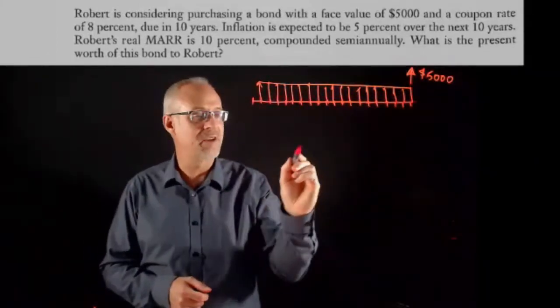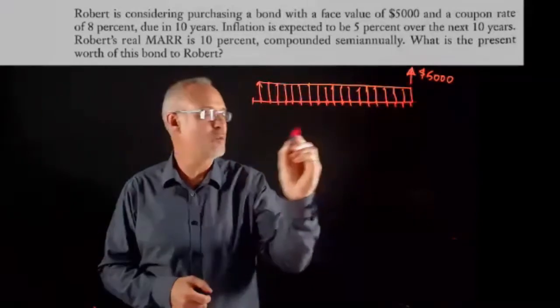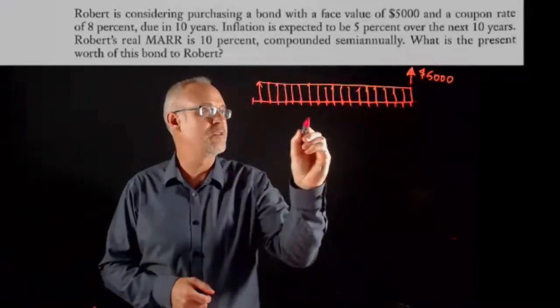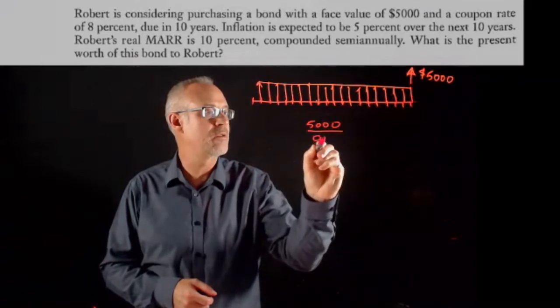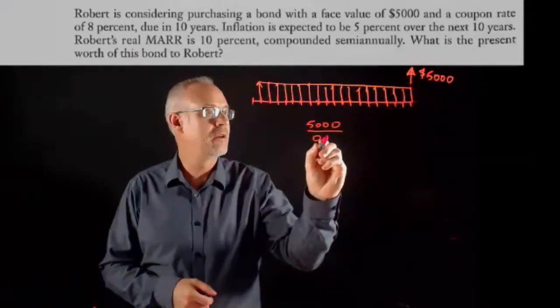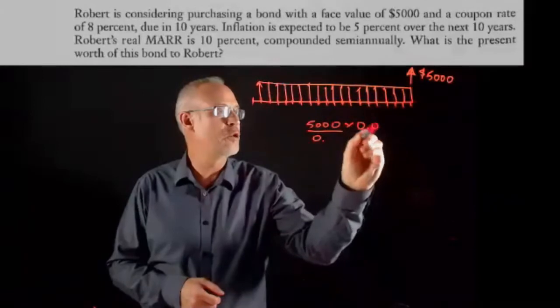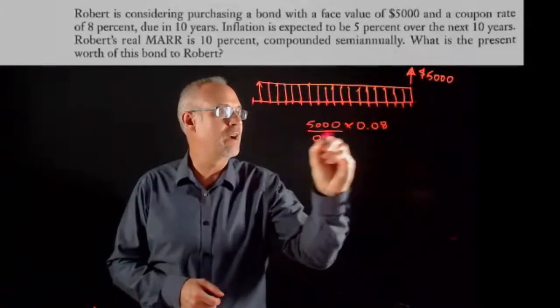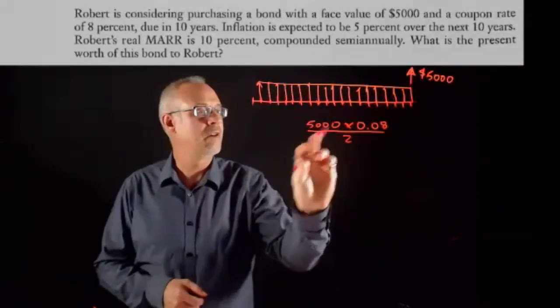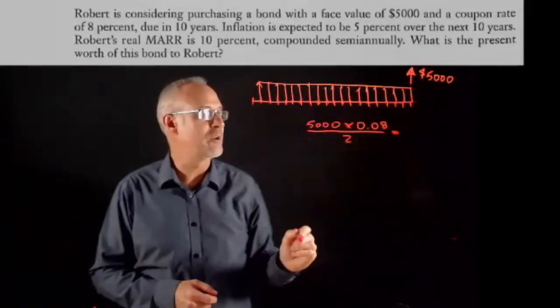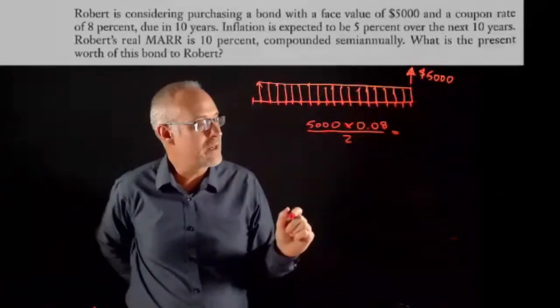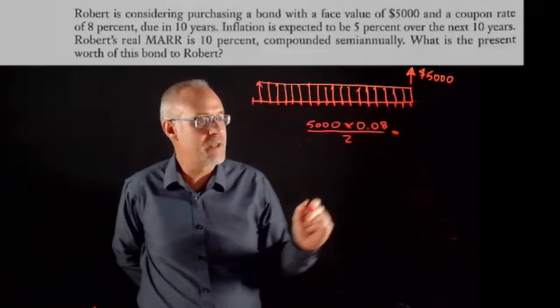You should remember how to calculate the coupon payment of a bond. We're given a coupon rate, so you take the face value. For the coupon payment, we take $5,000 and we multiply by the coupon rate and divide by two. That's the formula for a semi-annual coupon payment.